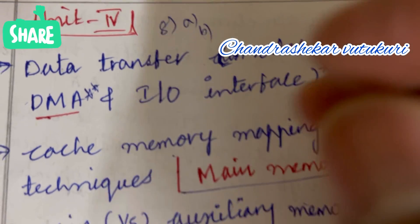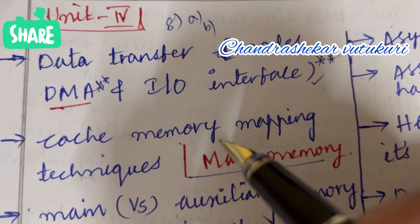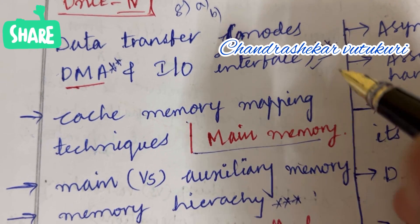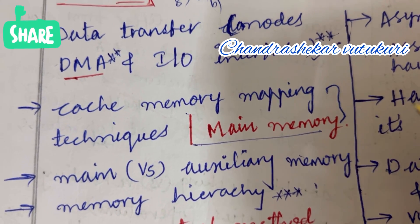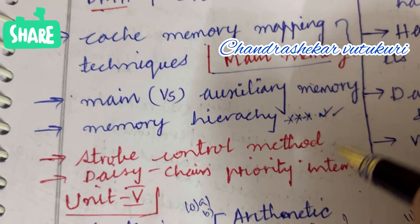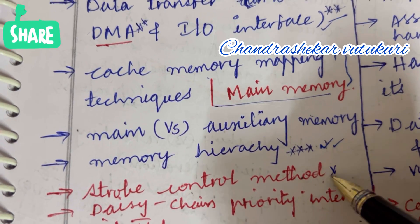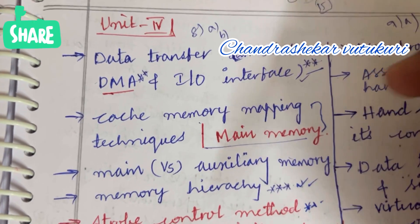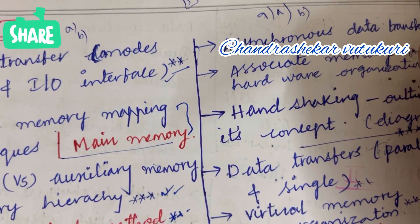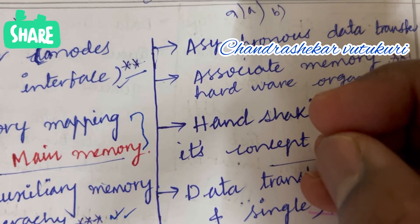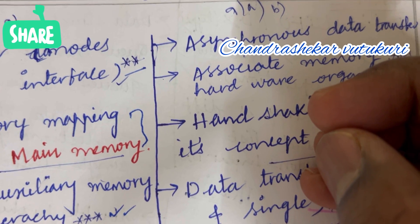Coming to the eighth and ninth questions: data transfer modes, DMA, and input-output interface move are the topmost questions in 8A. Cache memory mapping techniques and main memory are also very important questions. Main versus auxiliary memory as well as memory hierarchy are set to be very important questions from Unit 4. Strobe control method may be asked this time, and daisy chain priority interrupt is also set as the topmost question which may occur in 8A and 8B. There are no separate short questions — work out all the highlighted important points so you can answer both short and long for 12 marks.